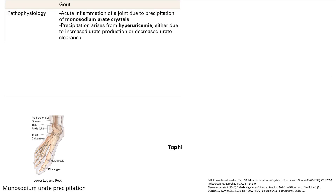Now we're going to talk about gout. Gout is inflammation of a joint due to precipitation of monosodium urate crystals. So you have uric acid in your blood, and if it gets too high, that's the term for hyperuricemia.